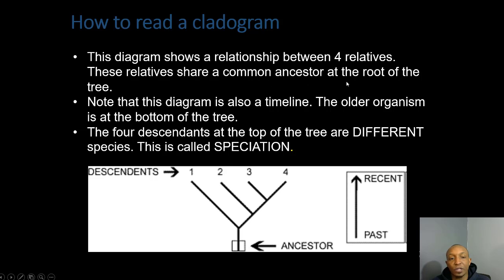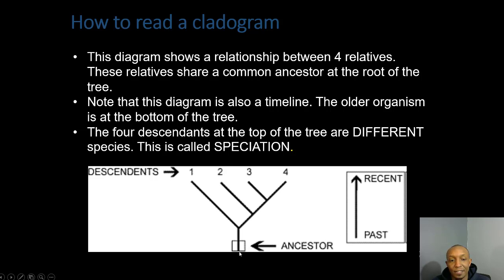How to read a cladogram: this diagram shows a relationship between four relatives who share a common ancestor at the root of the tree. This diagram is also a timeline — we start from the past at the bottom and move to the more recent or present as we go up. The older organism is always at the bottom.